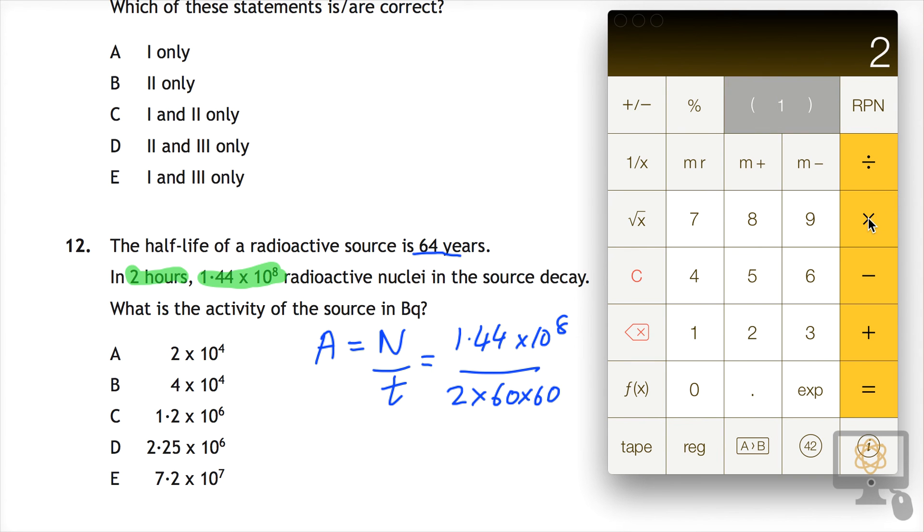2 times 60 times 60 again. And then we'll close the bracket and that would mean that there's 7,200 seconds in two hours.